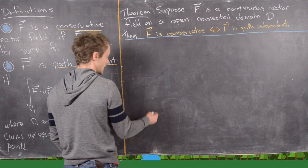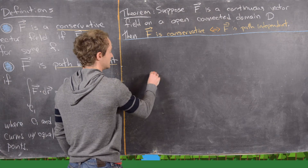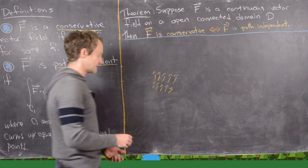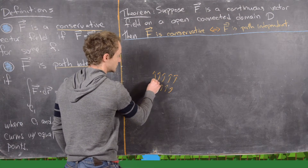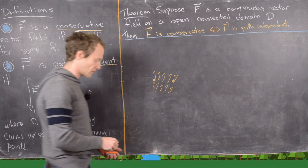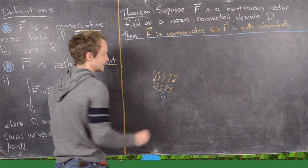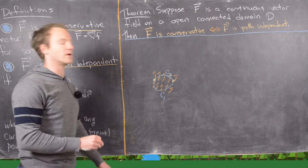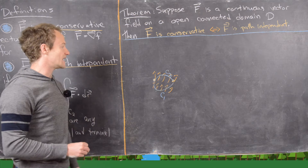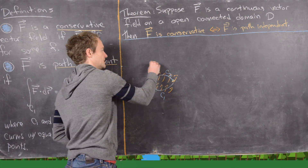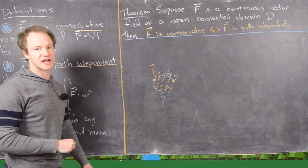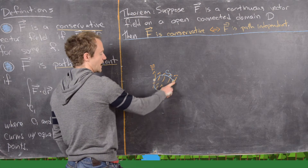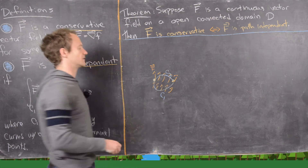To sketch what's going on: we have a vector field given by these arrows, an initial point, and a terminal point. C1 is one curve connecting them and C2 is another curve connecting the same two points. We say that the vector field F, given by the orange arrows, is path independent if the line integral over curve C1 equals the line integral over curve C2.